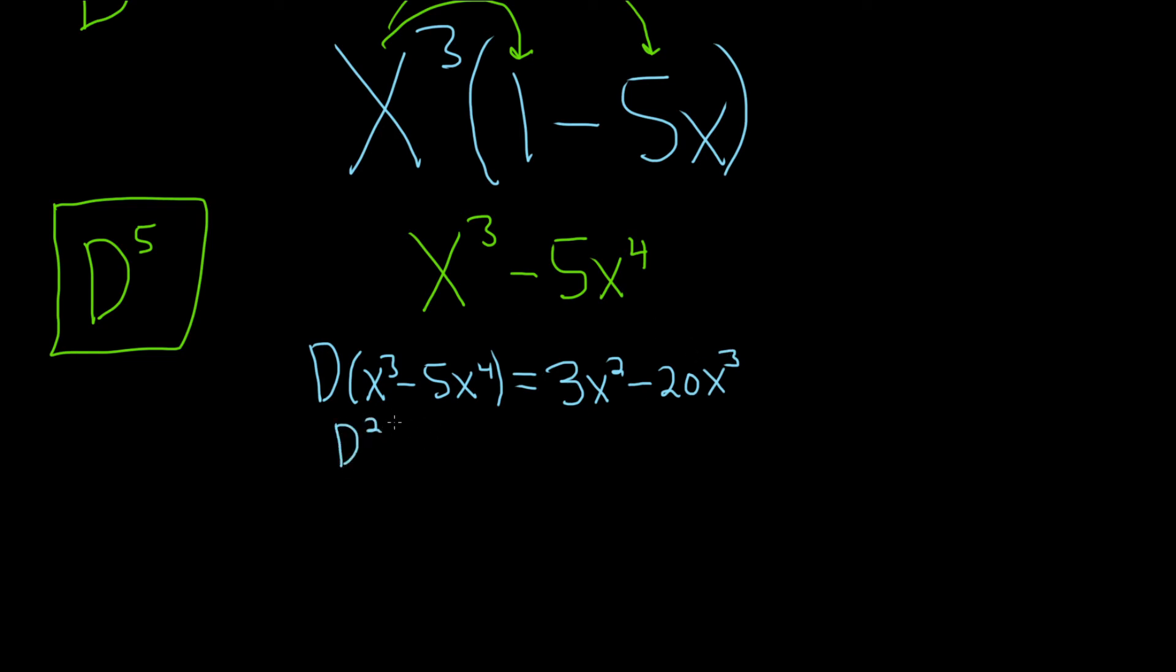Doing it again, x cubed minus 5x to the fourth. So derivative here would be 6x minus 60x squared. I could have called this y, and then this would be y prime, and this would be y double prime. So I'm using this cumbersome notation just to get you used to the differential notation.